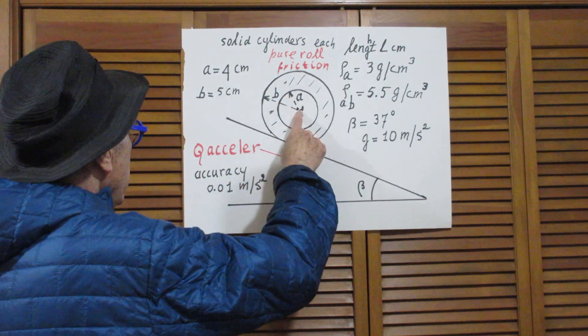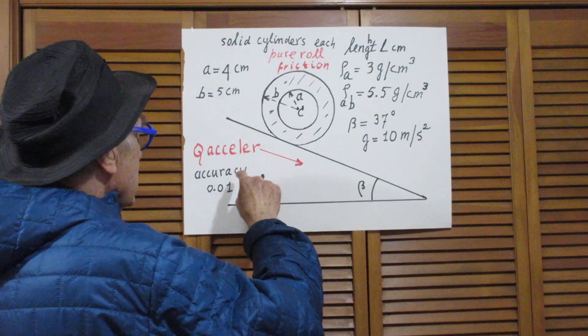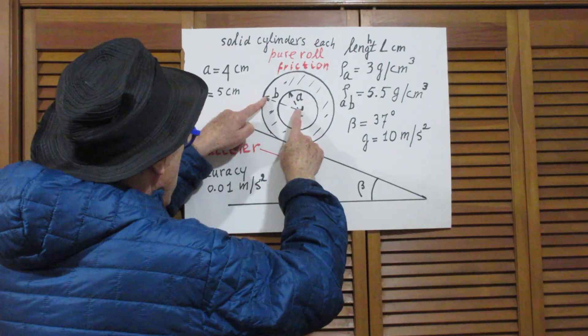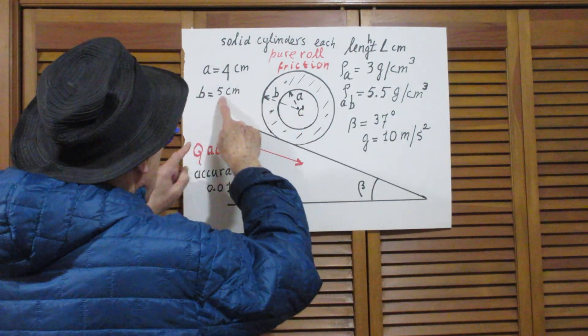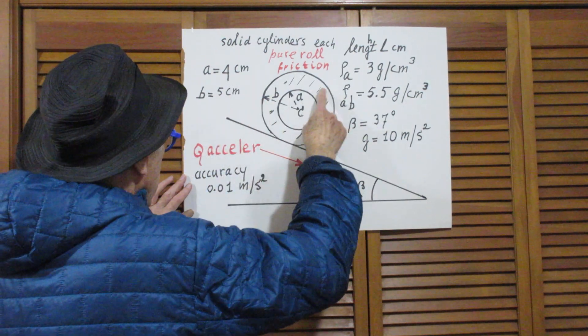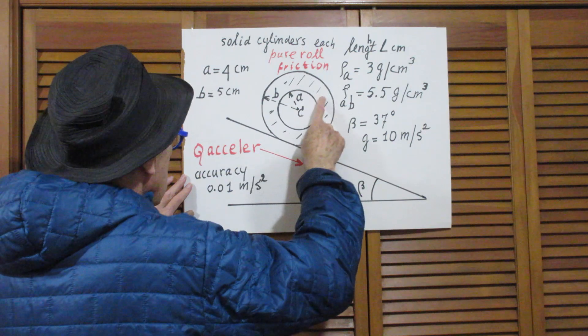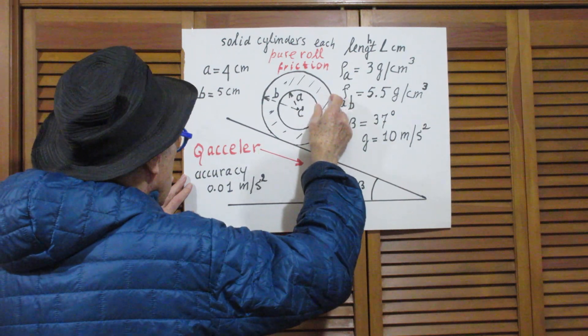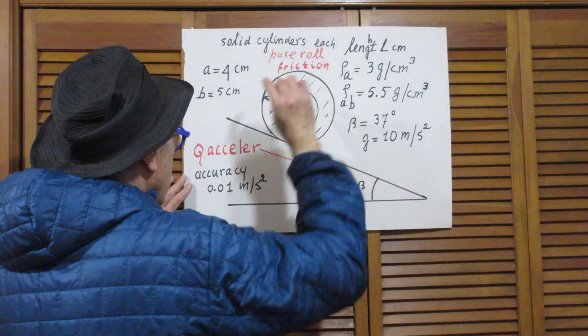a is four centimeters and b is five centimeters, so the width here is only one centimeter (five minus four).